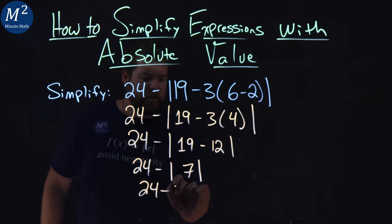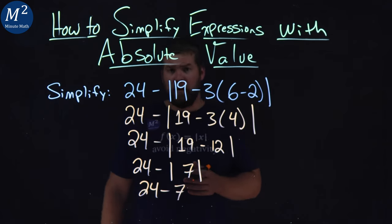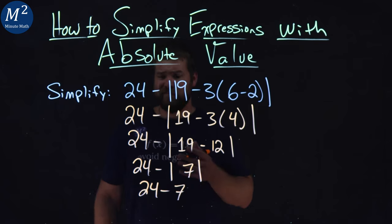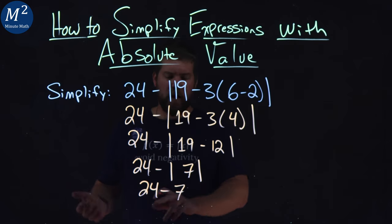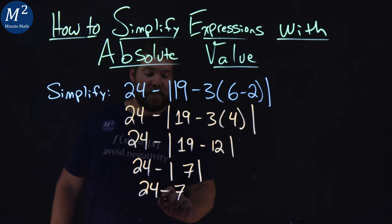24 now, minus a positive 7. From here, we just subtract. We're almost done. 24 minus 7 comes out to be 17.